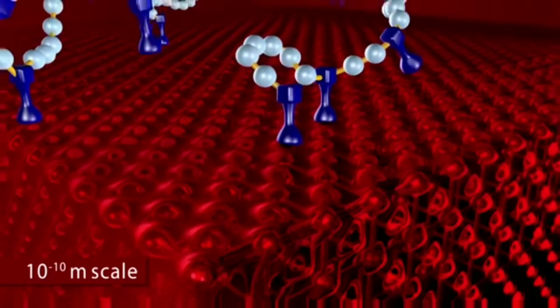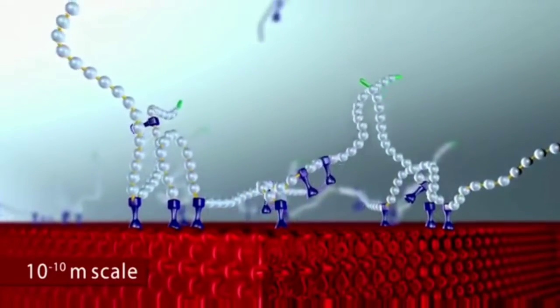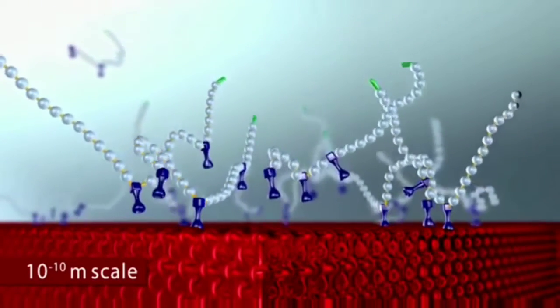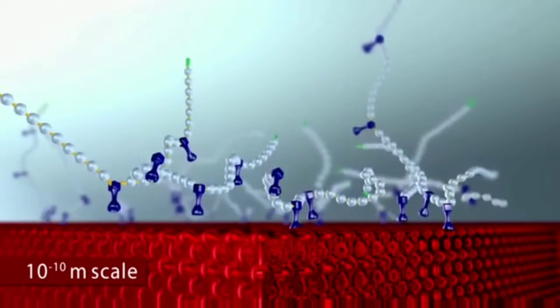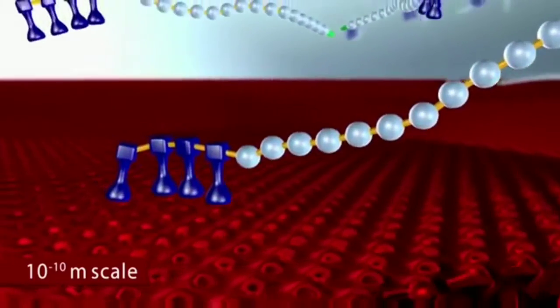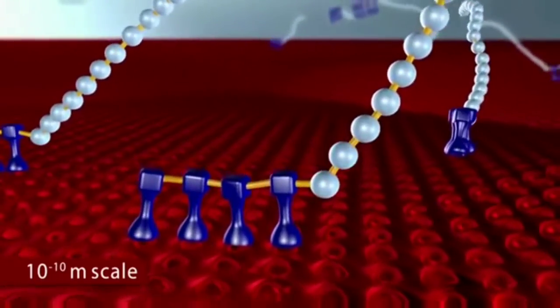Conventional dispersing agents have a rather random distribution of anchoring groups along the polymer chain. Bringing together our expert knowledge from producing resins and pigments, CFRP-based dispersants were specifically designed to perfectly fit to pigment surfaces and their surrounding.